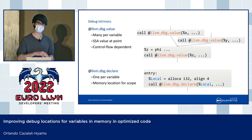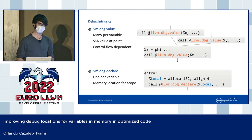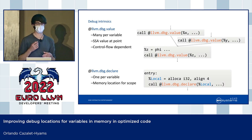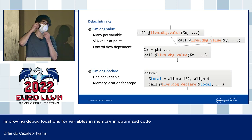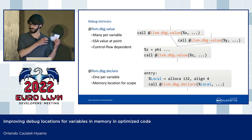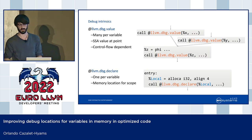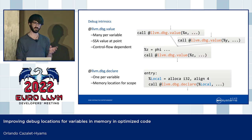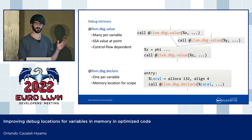And on the other hand, we have debug declare. When we use this, it just specifies that the variable lives in memory at some address for its lifetime.